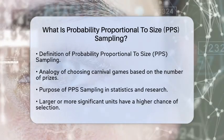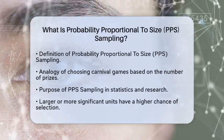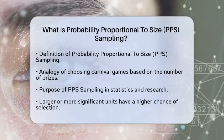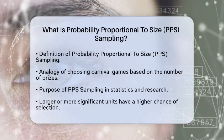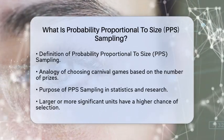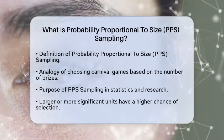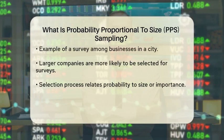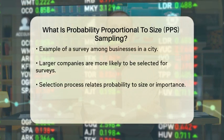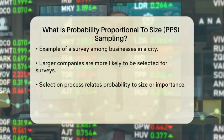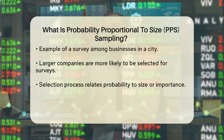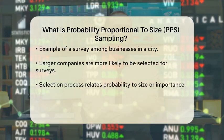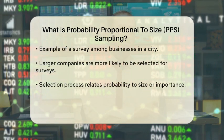This sampling technique is often used in statistics and research to ensure that larger or more significant units have a higher chance of being selected. In practice, this means that if you have a population where certain elements are larger or more important, they are given a greater probability of being included in your sample.